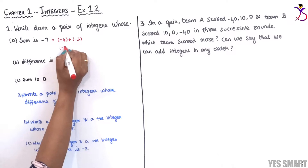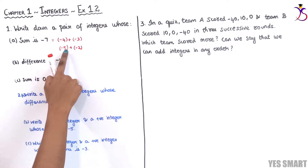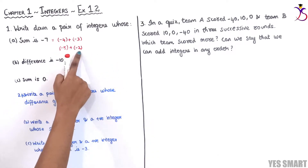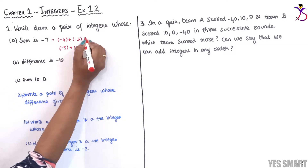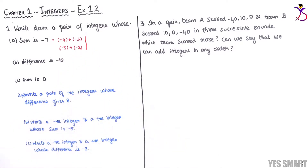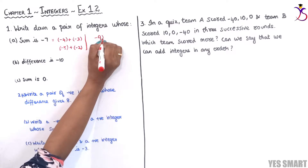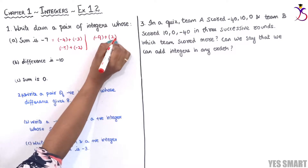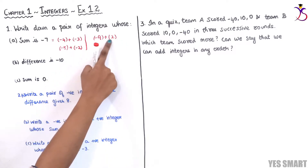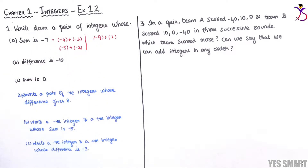So the split-up is minus 4 and minus 3, or we can write minus 5 and minus 2 also. Since it is plus, we won't change the sign — minus into minus plus — when you add we will get 7, the greater number sign is minus. We can write other examples also: minus 9 plus 2. Minus into plus minus; on subtraction we get 7, and the greater number 9 is minus. If you want one positive and one negative integer, you can write like this — there are many examples.